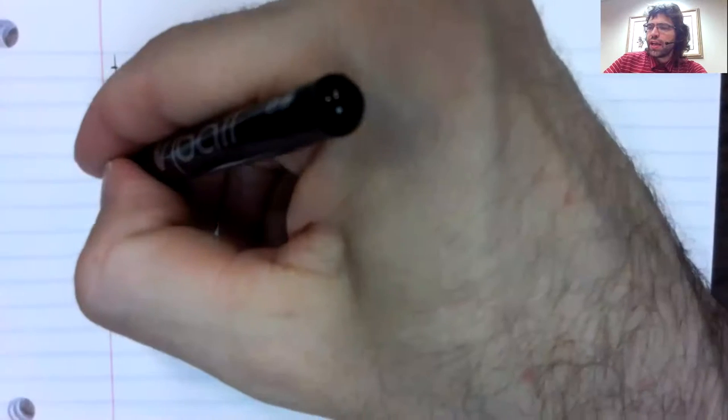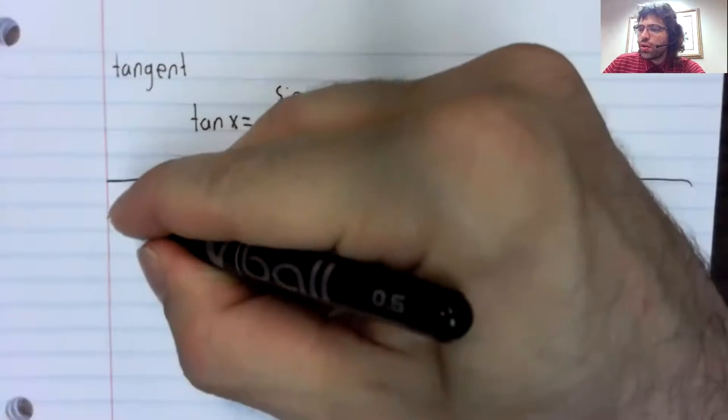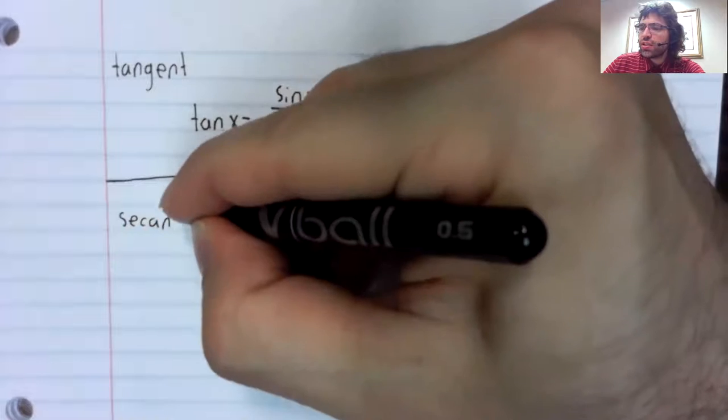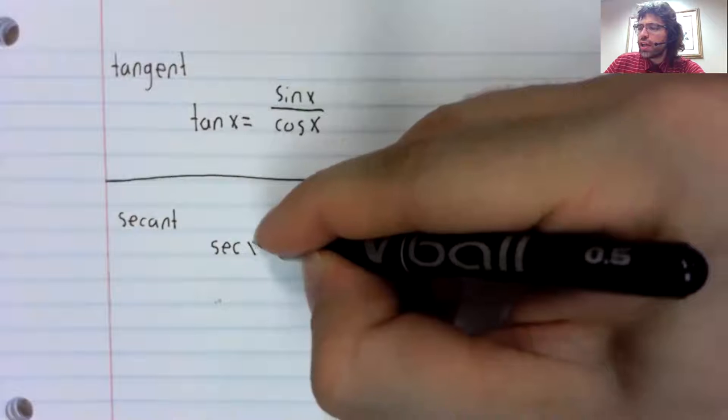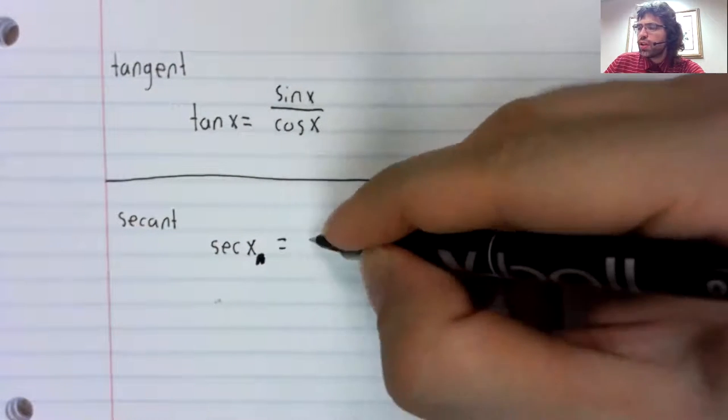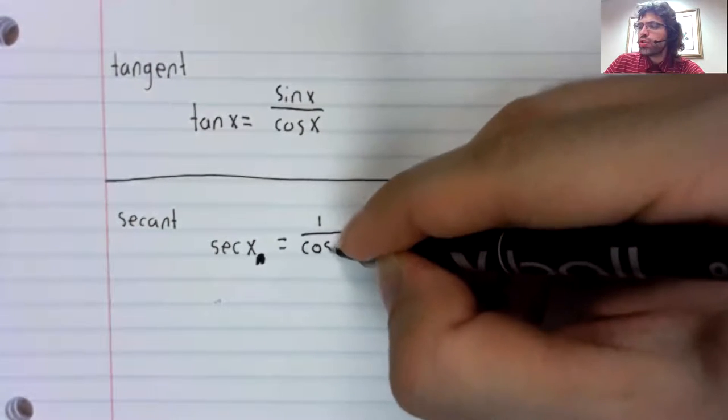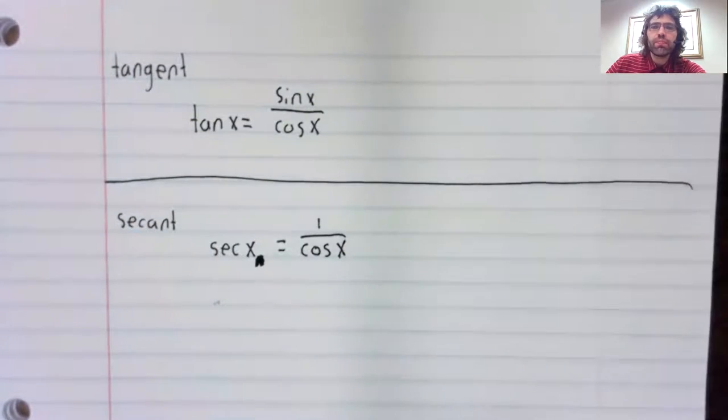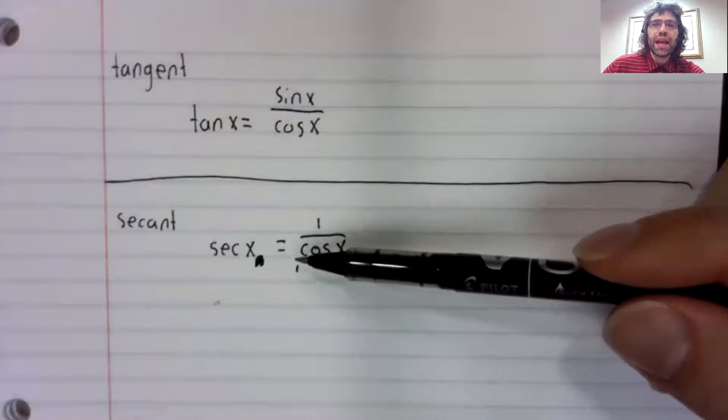After the tangent, we'll define the secant. After the sine, cosine, and tangent, the secant is the most important trig function. And what we're going to see when we get into the meat of this course is that the secant inherits its importance from the tangent.